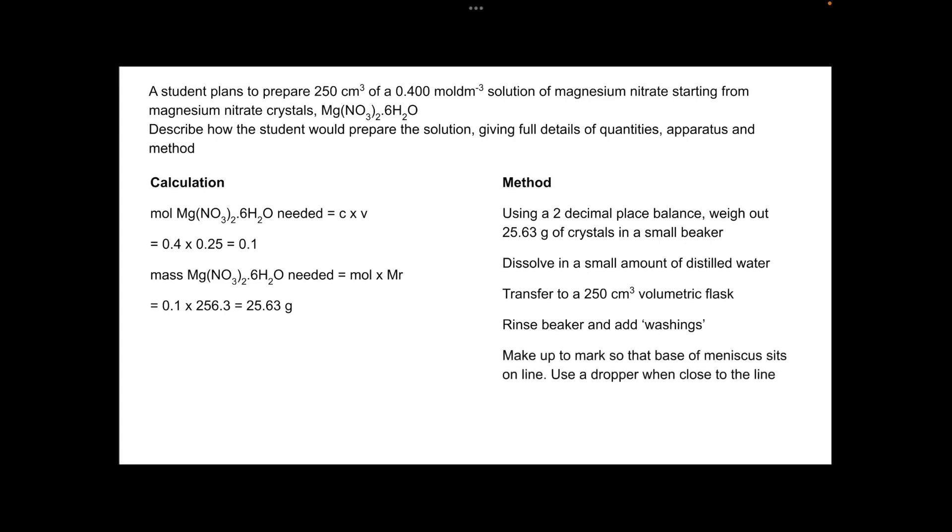You'd then make the solution up to the mark, so the graduation mark that's on your volumetric flask. You'd make it up to the mark so that the base of the meniscus sits on the line. And you could add, if you wanted to, that you'd use a dropper when you get close to the line.